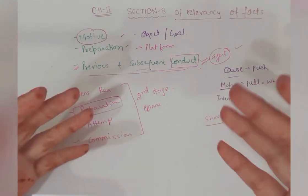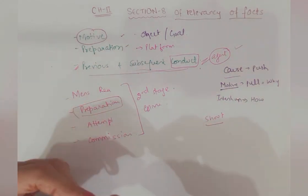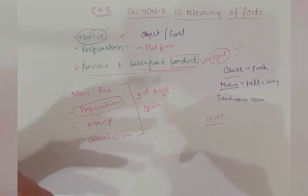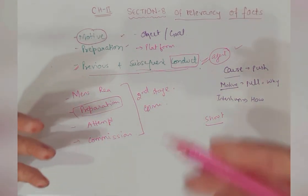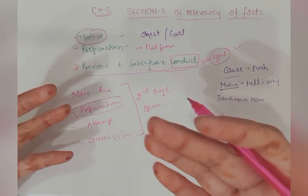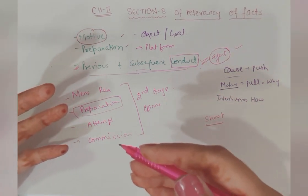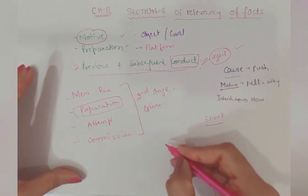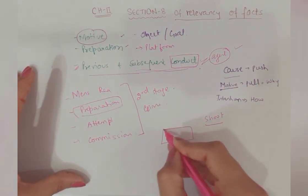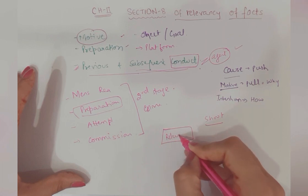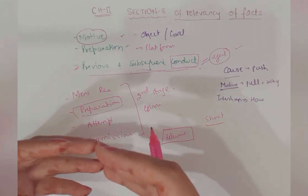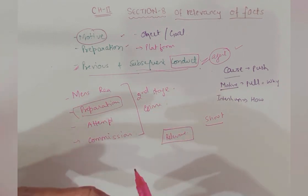Another example: Dowry death of wife by poison. After death, when police came and wanted to conduct post-mortem, but accused husband is making all efforts, even quarreling with police. He wants to prevent the post-mortem. So this is the relevant conduct - whatever conduct the husband is doing will be considered relevant because he is trying to influence the cause of death and now he doesn't want to let the investigation go on.